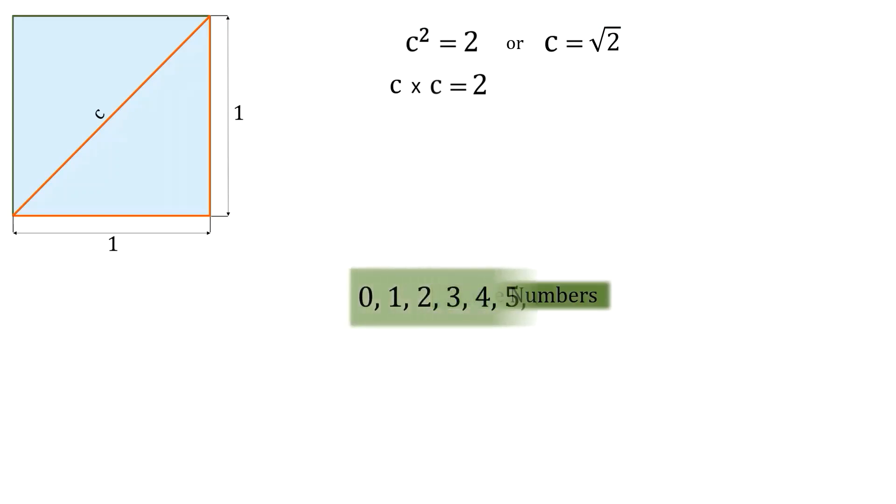To understand why they are upset, let us examine this equation c squared equals two, which in turn means c multiplied by c must be equal to two. According to the Pythagoreans, the value of the diagonal, indicated here by the letter c, should either be a whole number or a ratio of two whole numbers. Assuming that they are correct, let us check which whole number will be equal to c.